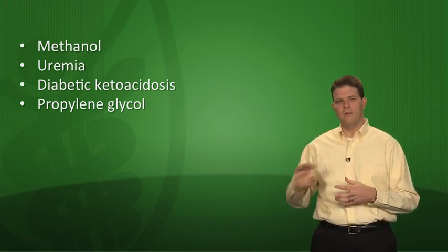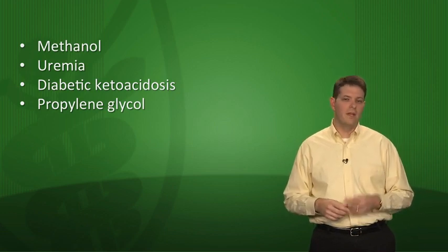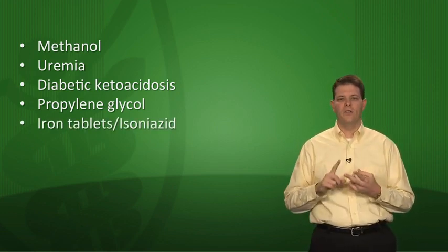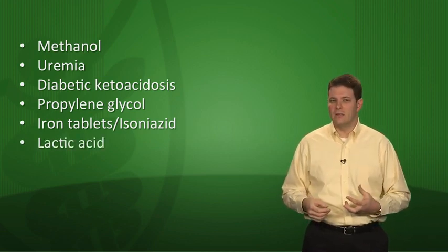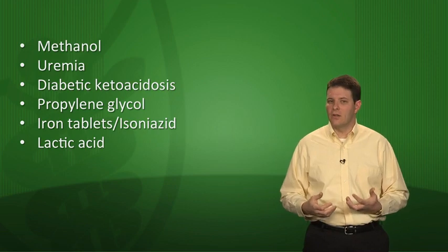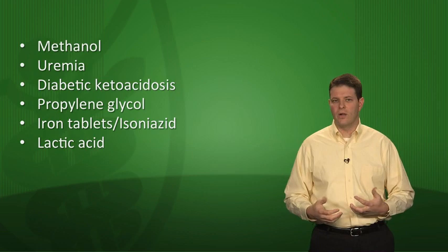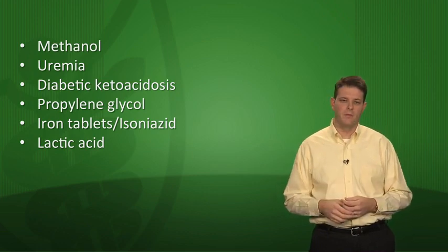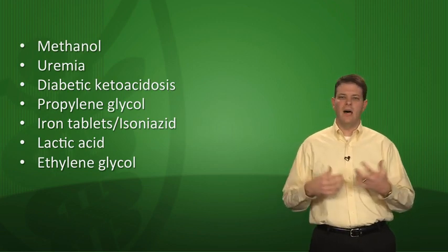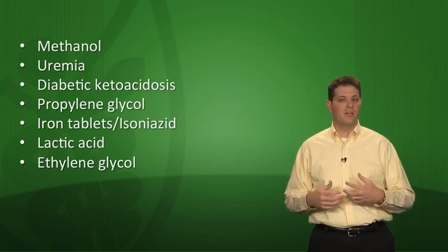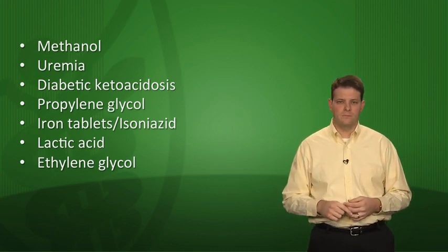I in MUD PILES is for two things: iron tablets and also isoniazid (INH). L is for lactic acid — you're most likely to see lactic acidosis in a patient who's in shock or coding, not perfusing tissues well. E is for ethylene glycol, found in antifreeze. Several organic acids on this list — methanol, propylene glycol, ethylene glycol — are things people might drink for one reason or another.